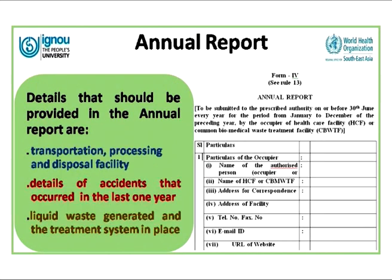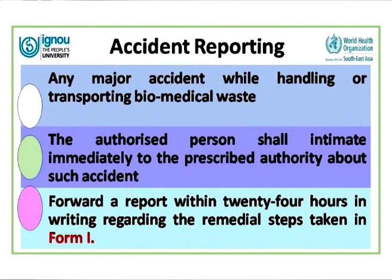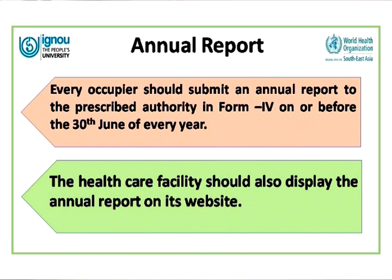Details to be provided in the annual report include particulars of the healthcare facility, details of on-site storage and treatment, details of transportation, processing, and disposal facility, and details of any accidents that may have occurred in the last one year. The liquid waste generated and its treatment must also be mentioned. Every occupier must submit an annual report to the prescribed authority in Form 4.